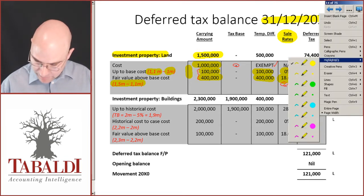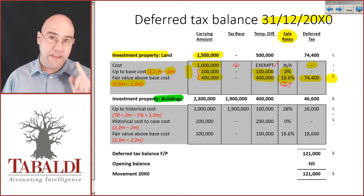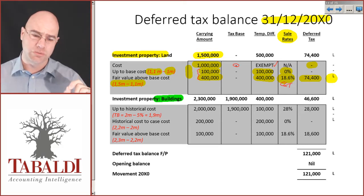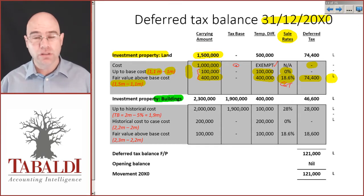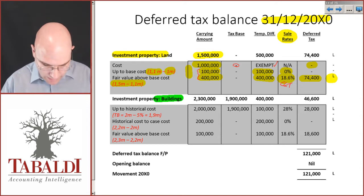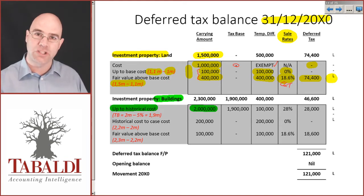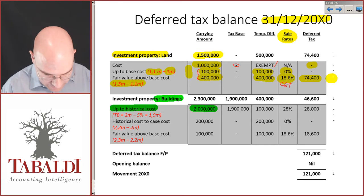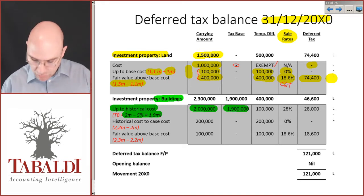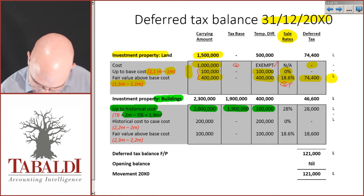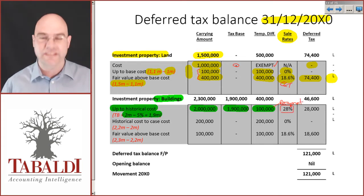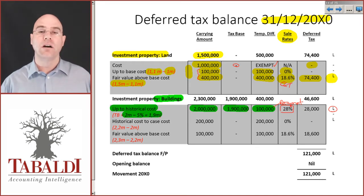Now the building. It's investment property, so recovery is through sale, not use — if it were PPE being used it would be a different story. Up to historical cost: the building was purchased for 2 million. The tax base is still applicable — just because there's no accounting depreciation doesn't mean we don't get the capital allowance. The capital allowance is 5%, so our tax base is 2 million minus 5% = 1.9 million, giving a 100,000 difference. That 100,000 would be treated like a recoupment if sold today, taxed at the 28% tax rate, giving a deferred tax liability of 28,000.